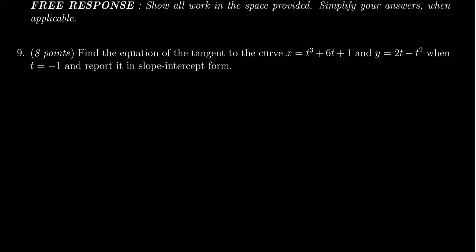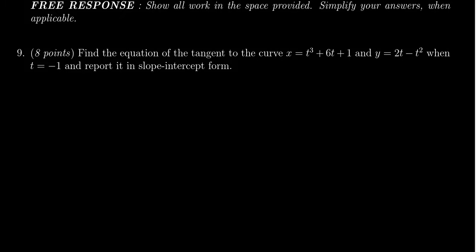In this video we will discuss the solution for question 9 on the practice final exam for math 1220. In this question we're asked to find the equation of the tangent to the curve x equals t cubed plus 6t plus 1 and y equals 2t minus t squared when t equals negative 1, and we're gonna report this tangent line in slope-intercept form.